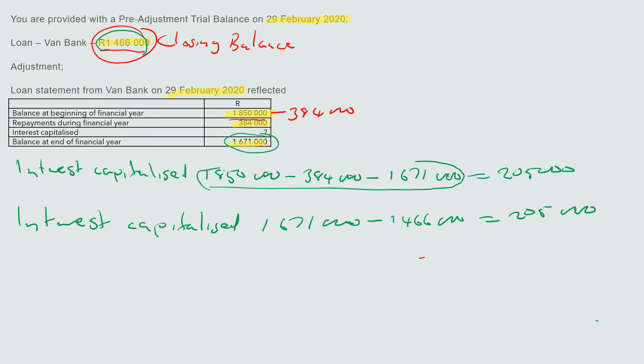This interest amount goes into the interest expense note — note number two — also referred to as finance cost. If you like this presentation, please subscribe to the channel, like this video, and share it. Thank you so much.